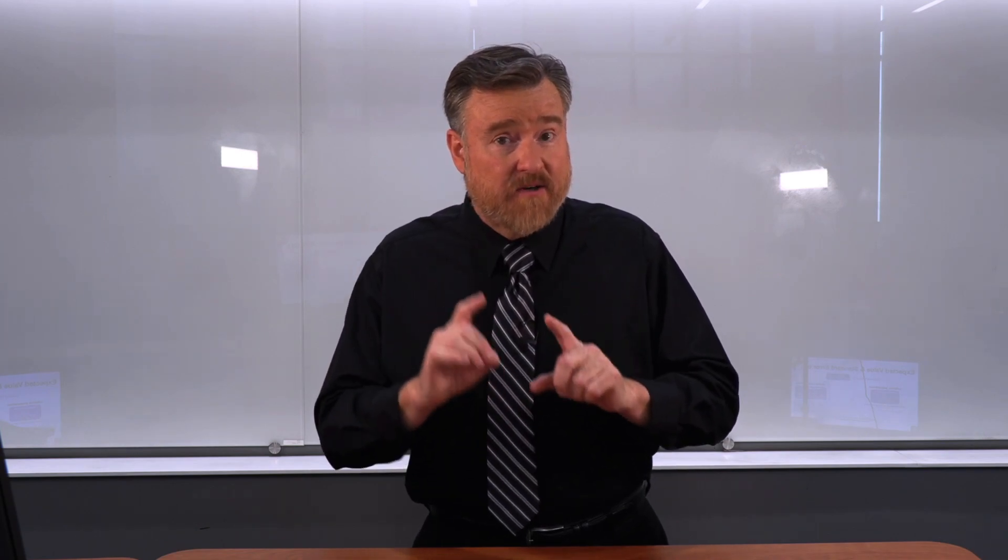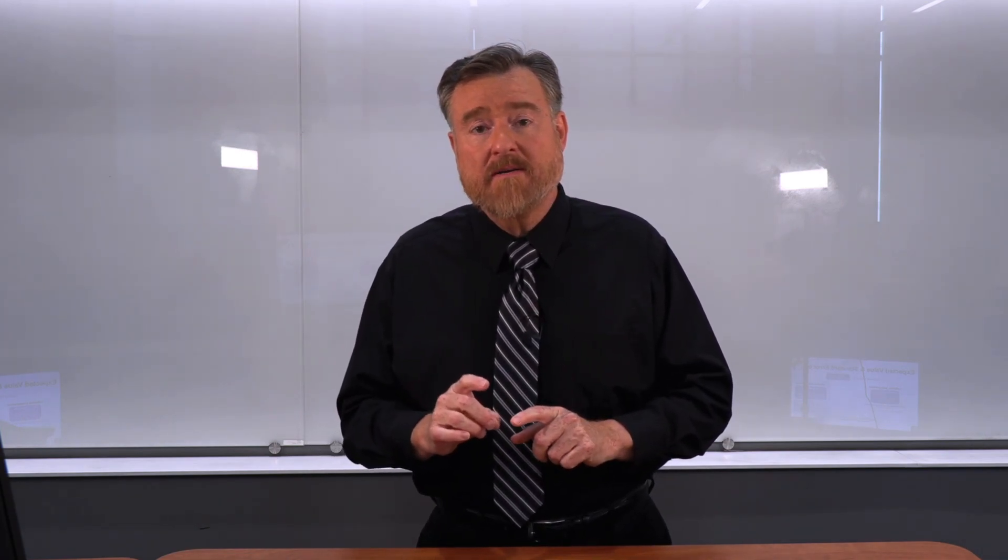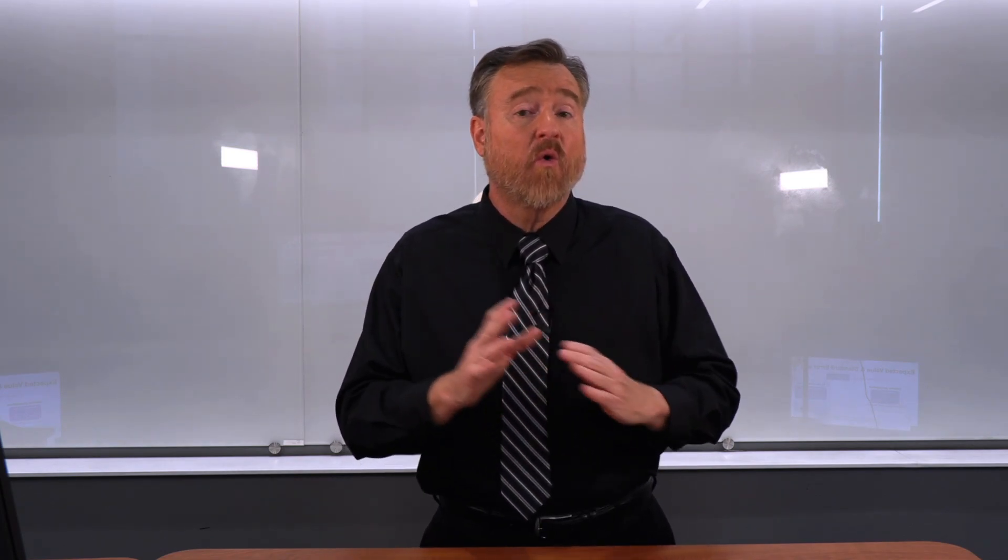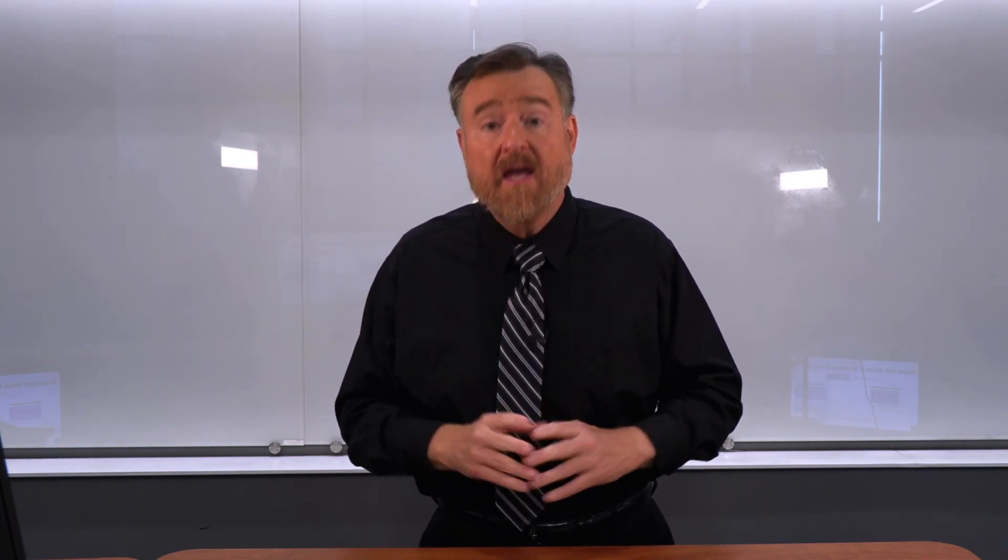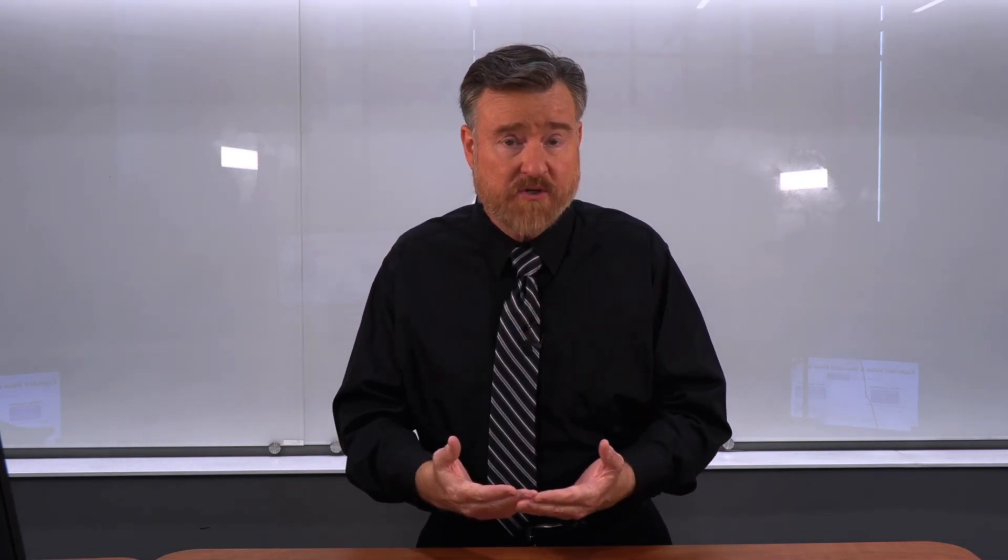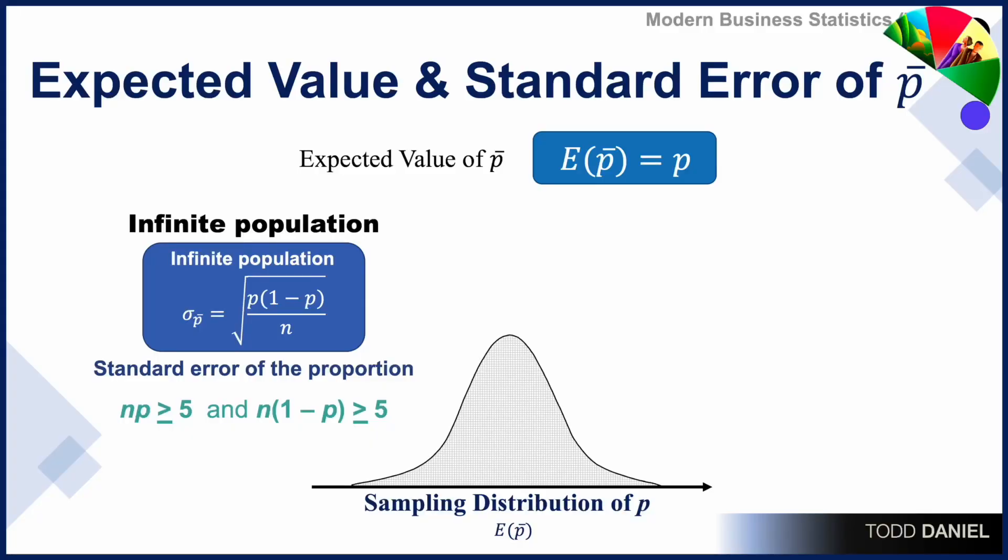However, the standard error around the proportion will be calculated depending on whether we're using an infinite or a finite sample. If the sample size is large enough and we can estimate using a normal distribution, given the parameters that I explained just a moment ago, then the standard error of the proportion is the square root of P times 1 minus P over N.